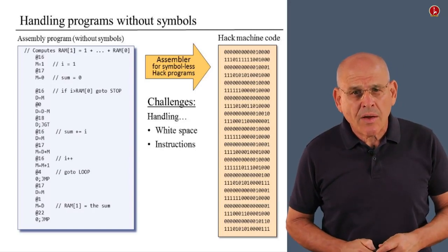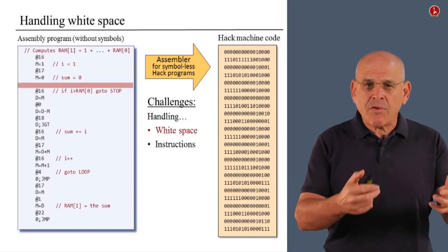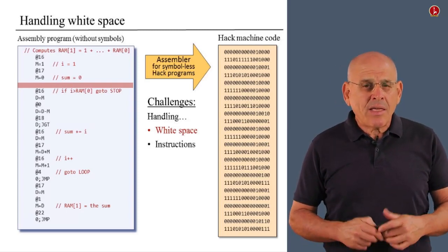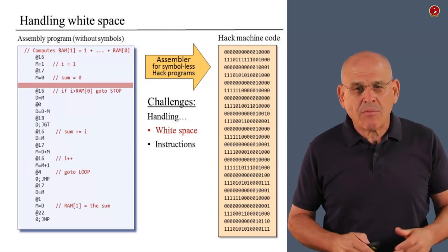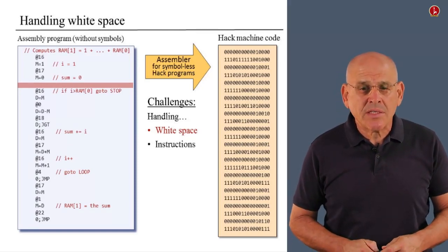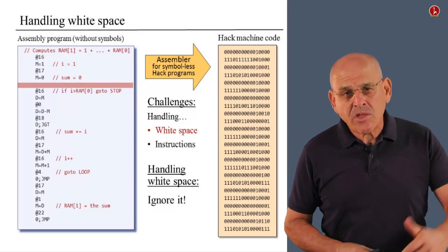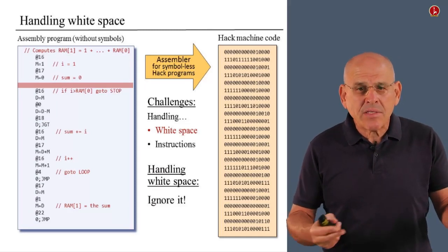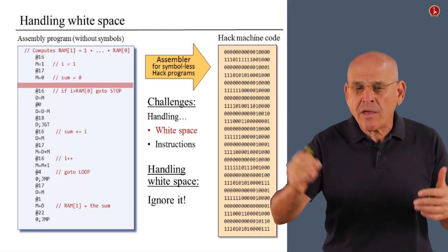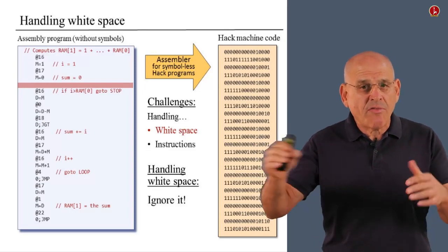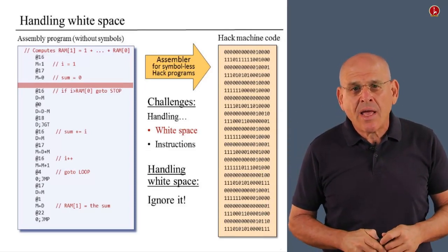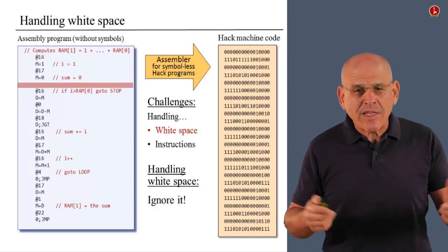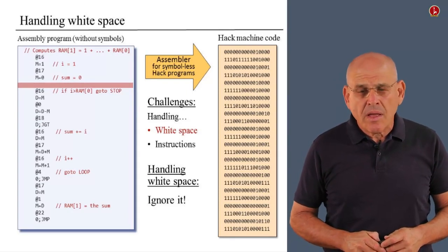What should we do with white space? Once again, I've used red ink to highlight all the white space in the program. And the easiest way to deal with white space, and obviously the most sensible way, is to simply ignore it. So as you process the source code, whenever you see a comment or an empty line, you simply toss away all the contents that follow in this specific line, and you go on to translate the remaining code. White space is simply ignored.